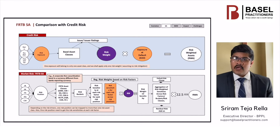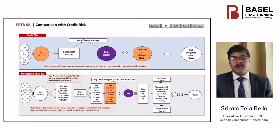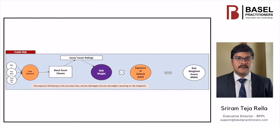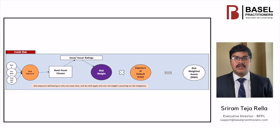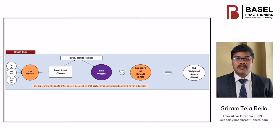Now, coming to comparison with credit risk — we are all familiar with credit risk which is straightforward. But in market risk, specifically FRTB, there will be multiple computations though it is a standardized approach. In credit risk, we map the exposures to different Basel asset classes based on party type and product type. After proper bucketing, we assign the risk weight based on external rating, and compute the RWA by multiplying EAD with risk weight. In credit risk, an exposure can be mapped to one and only one asset class, and we have one and only one risk weight in the plain vanilla case.